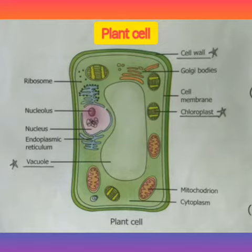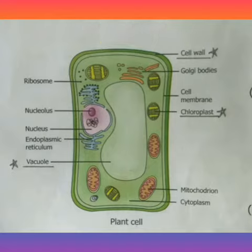They are of different colors. Some of them contain green pigment called chlorophyll. So green colored plastids are called chloroplasts. They provide green color to the leaves, and chlorophyll in the chloroplasts is essential for photosynthesis. Since preparation of food takes place in the chloroplasts, they are also called kitchen of the cell.